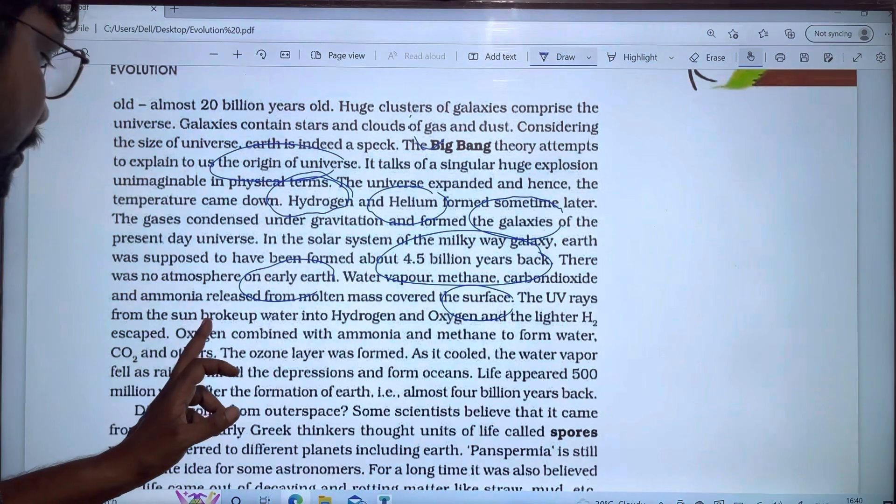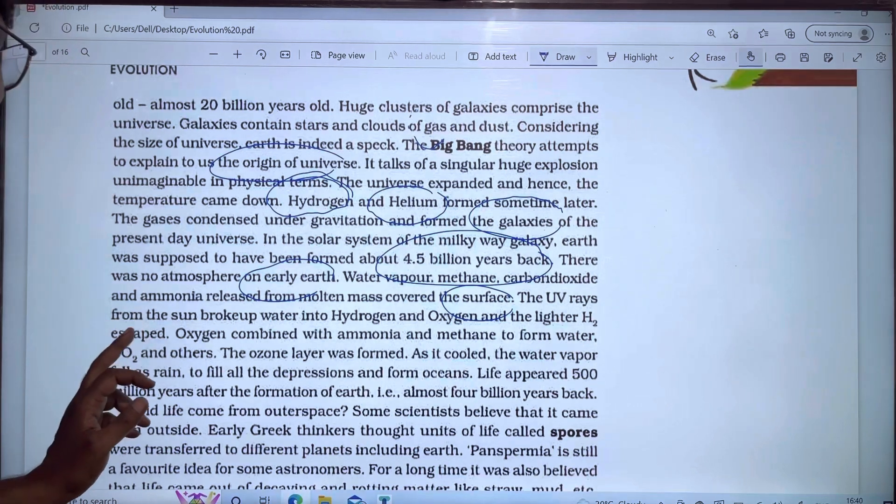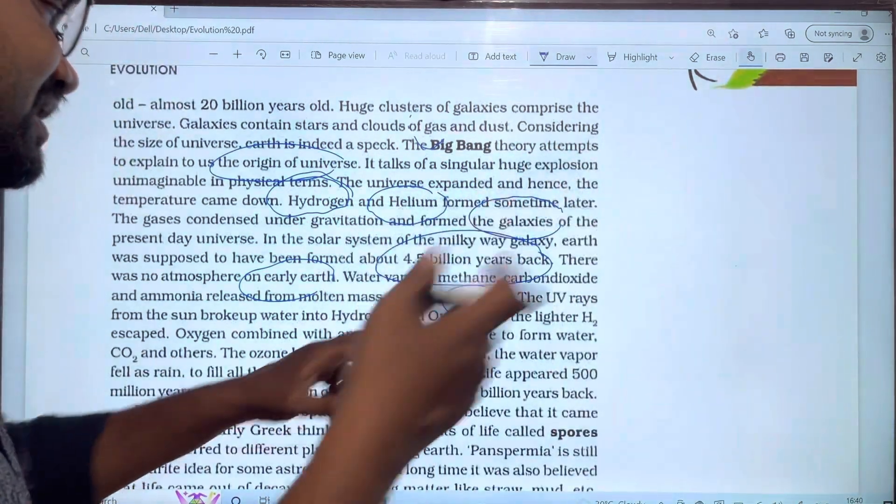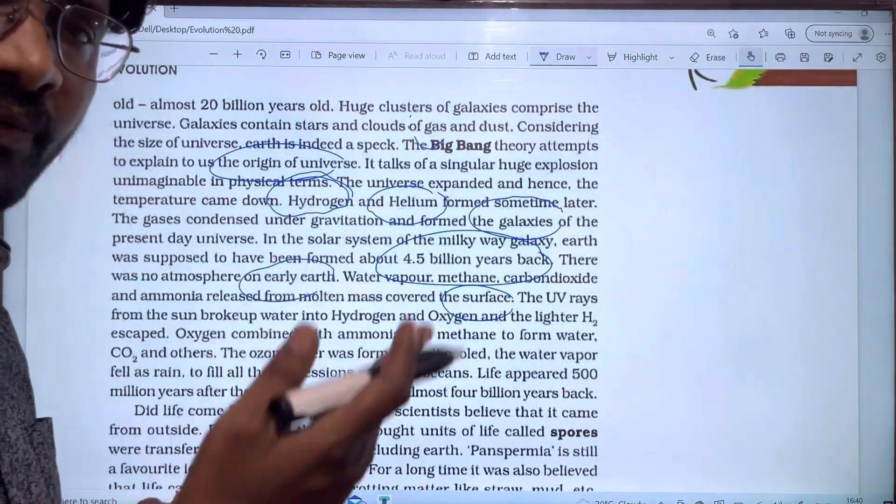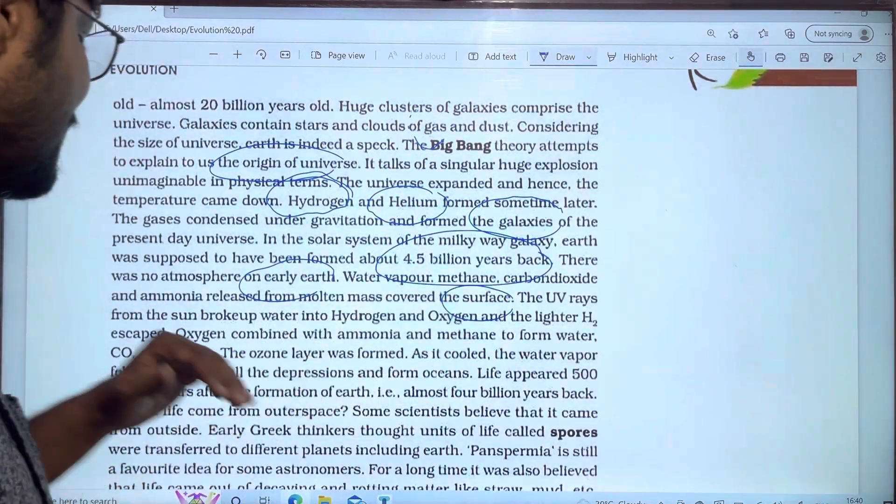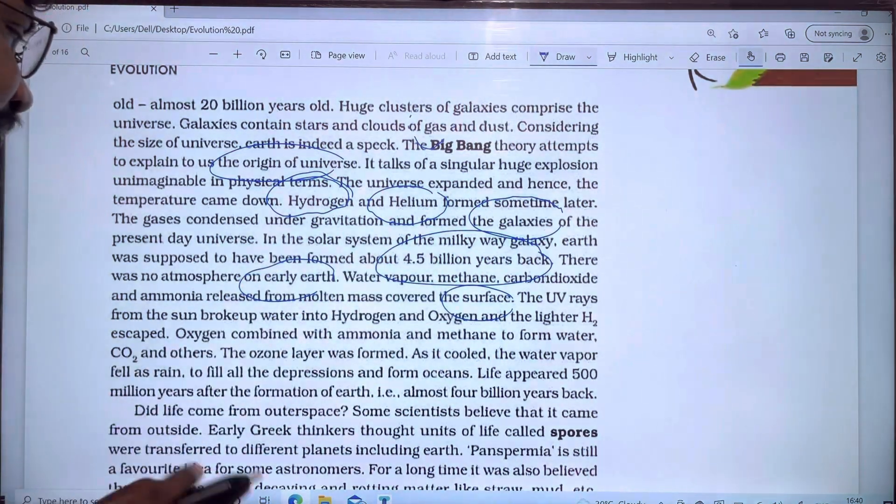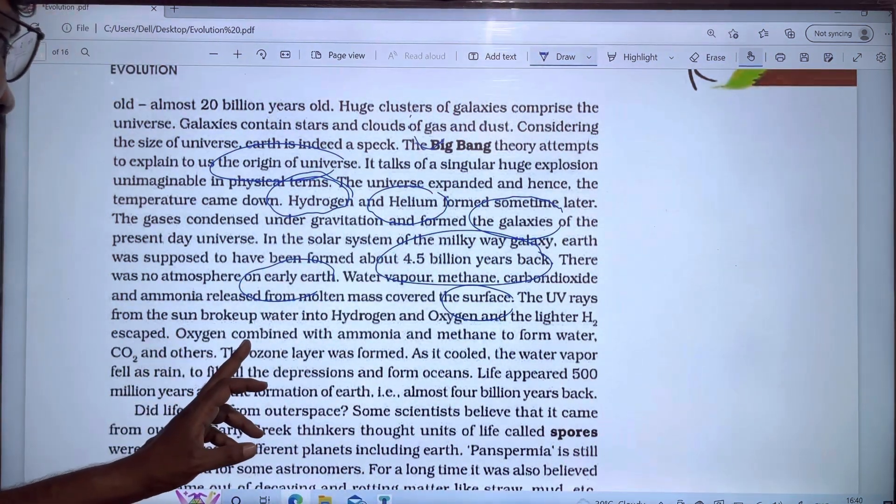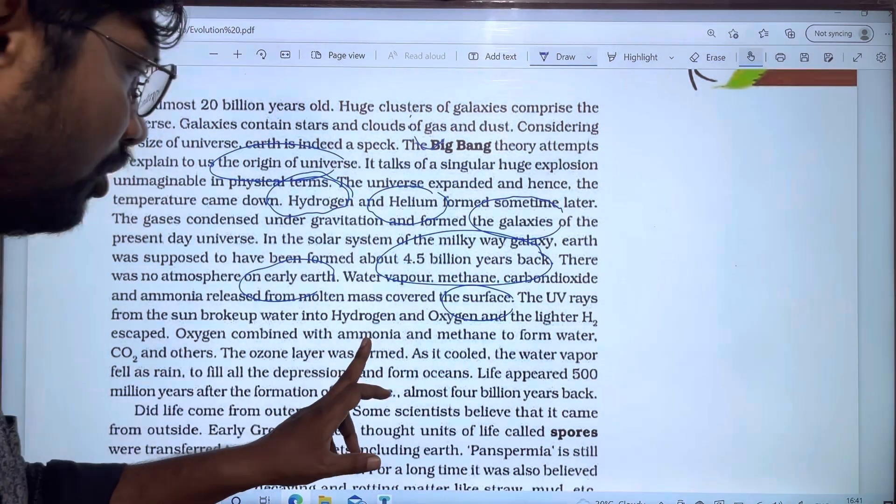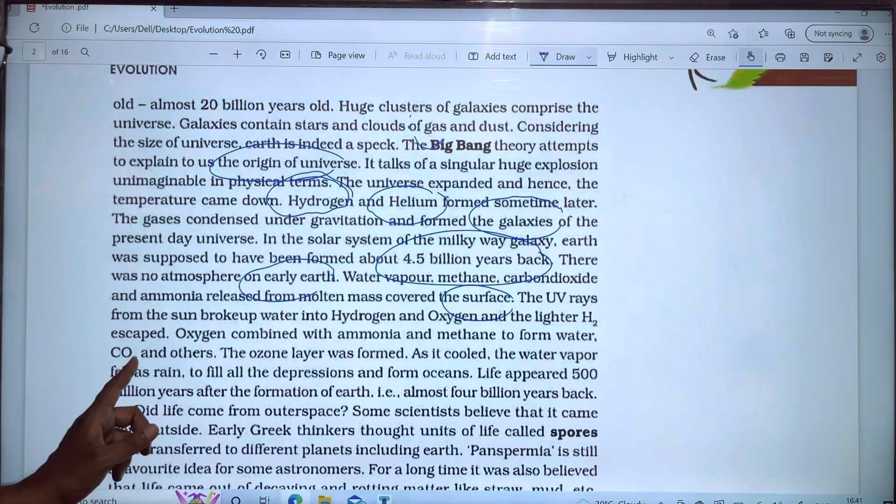The UV rays from the sun broke up the water into hydrogen and oxygen and the lighter H2 escaped. The water is combined with ammonia and methane. Water, ammonia and methane - these are all three of them. The UV rays are formed in the atmosphere.